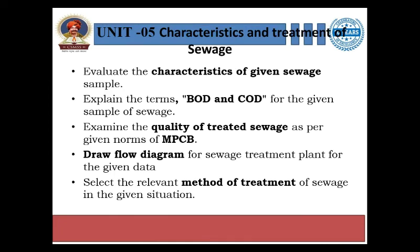Unit 5 is characteristics and treatment of sewerage. Once sewer water is collected, it has to be treated. In this unit we will evaluate the characteristics of given sewerage, explain the terms BOD and COD, explain the quality of treated sewer as per the norms of MPCB, draw the flow diagram for a sewerage treatment plant for given data, and select the relevant method of treatment of sewage in a given situation.